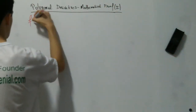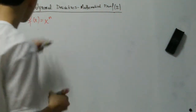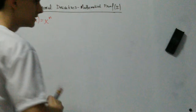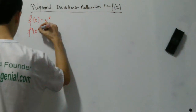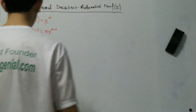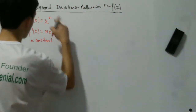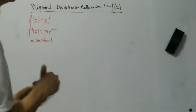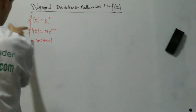Imagine you have a function f equal to x raised to the n power. This is a polynomial function, and we want to take the derivative of this function. This is one of the first derivatives we learn when we study calculus. The derivative f' is equal to n times x raised to n minus 1, where n is a constant and is just the exponent of x. We are going to prove in this video and the next one that this derivative formula is correct.